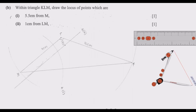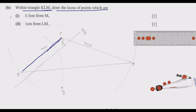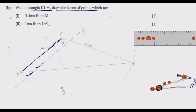For question B, number 2: find the locus of points 1 cm from LM. Reduce the compass to exactly 1 cm. Place the pin at one end of LM and make an arc; move to another point along LM and make another arc. Then use the ruler to draw a line tangent to both arcs — this gives you the locus line 1 cm from LM, earning you that one mark.